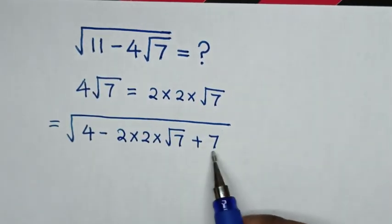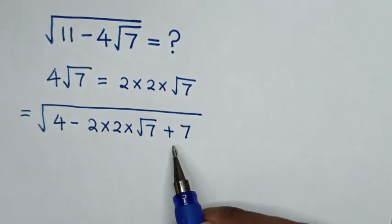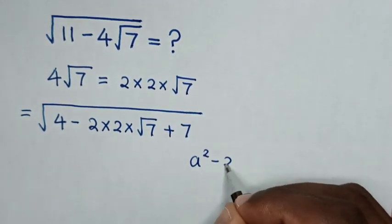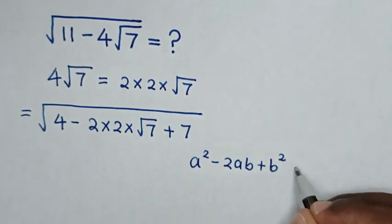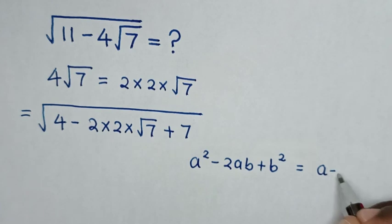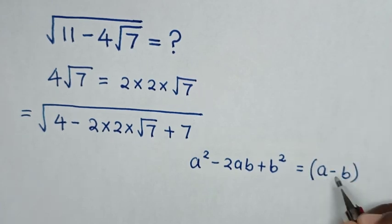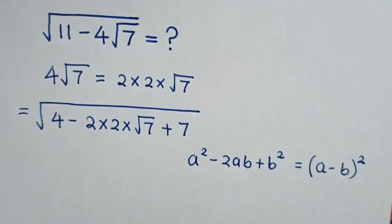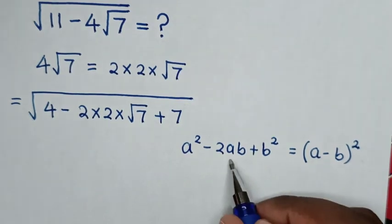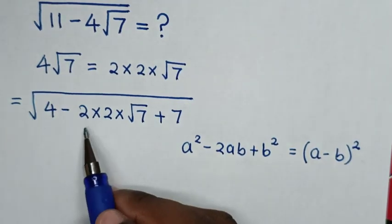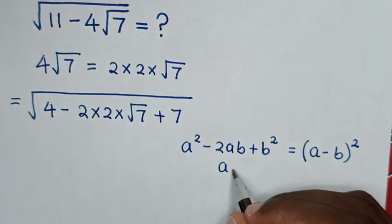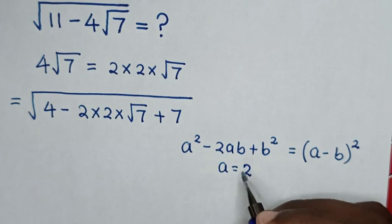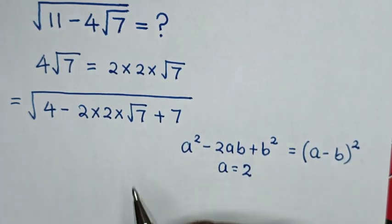this expression under the square root is in the form of a square minus 2ab plus b square, which is equal to a minus b bracket square. So when we compare 2ab with 2 times 2 times square root of 7, then a is equal to 2, and b is equal to square root of 7.